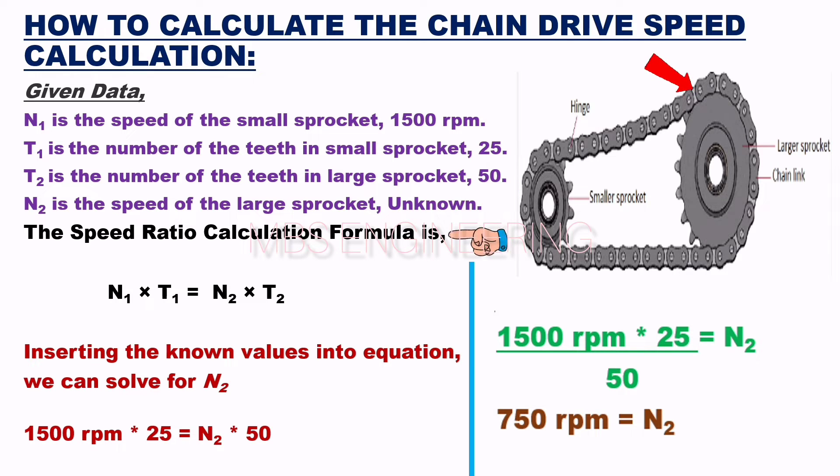The chain drive speed ratio formula is represented as T1 multiplied by N1 is equal to T2 multiplied by N2. Inserting the known values into the equation, we can solve for N2.